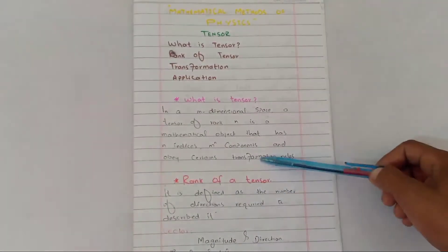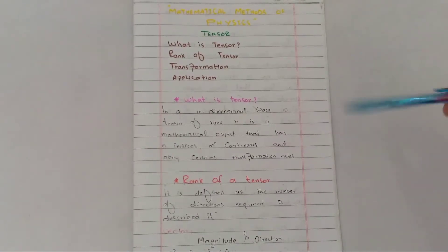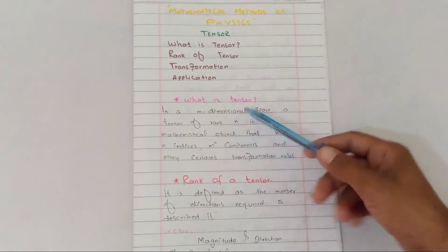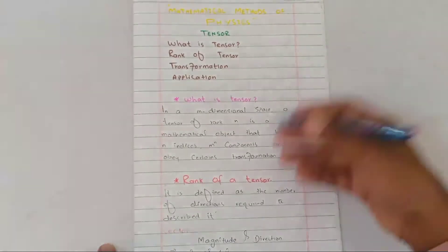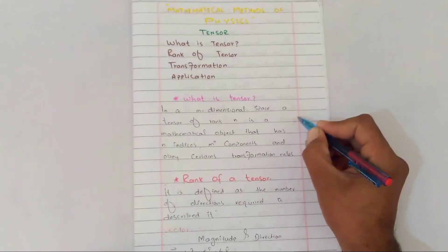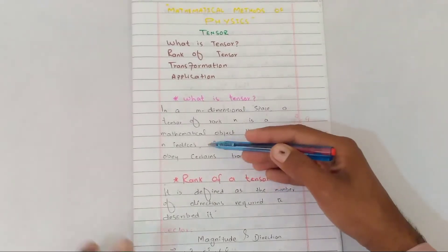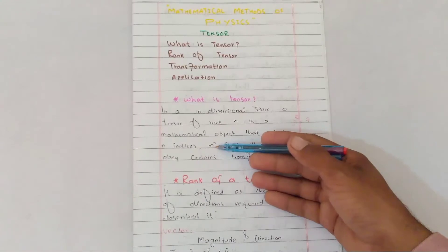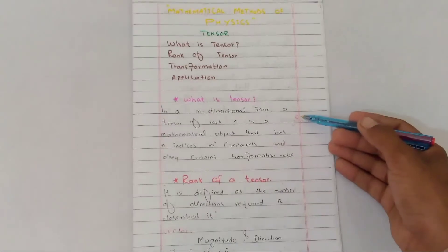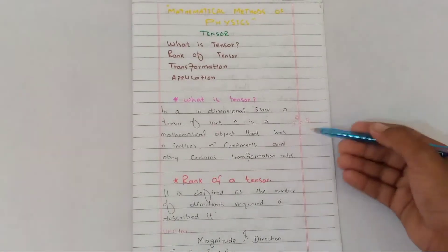It obeys certain transformation rules. For example, if we have a three-dimensional space and n has two indices, then we solve: 3 raised to 2 equals 9. So if we have a three-dimensional space with two indices, we will have nine components.